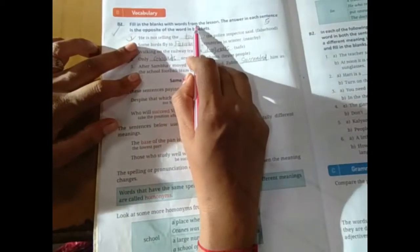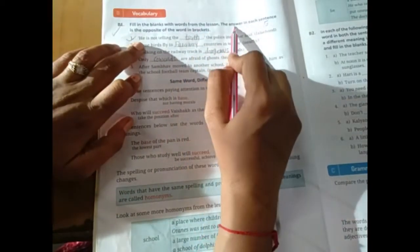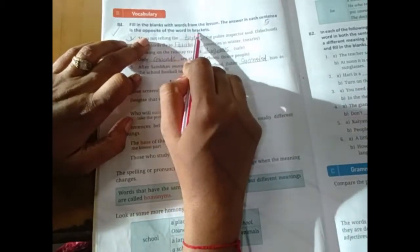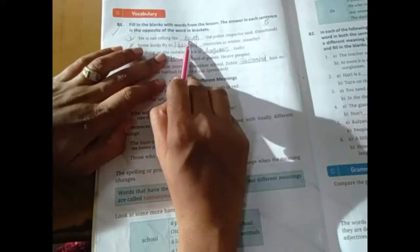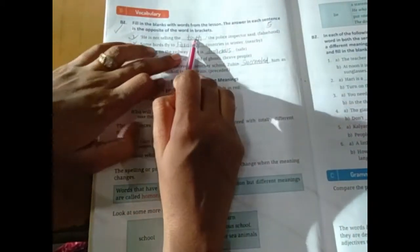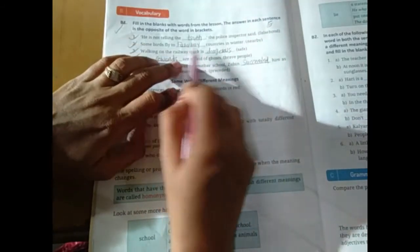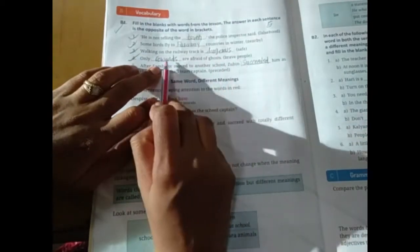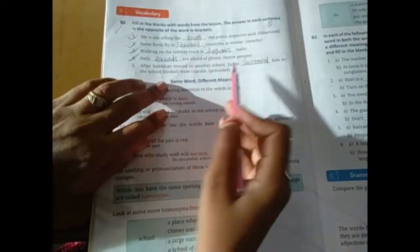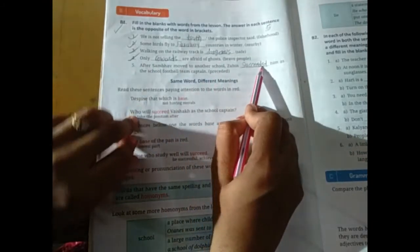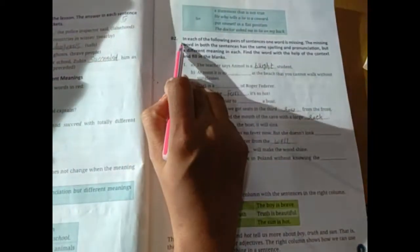Fill in the blanks with words from the lesson. The answer in each sentence is the opposite of the word in brackets. Falsehood. Nearby. Early. Safe. Dangerous. Brave people. Cowards. Preceded. Succeeded.